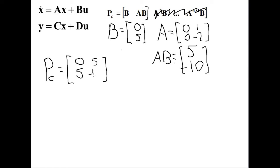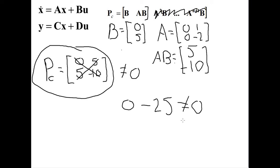And for the system to be controllable, the determinant of the controllability matrix has to not equal zero. Right, so for the determinant, zero times minus ten which is zero, and then minus five times five which is 25. That does not equal zero, therefore controllable.